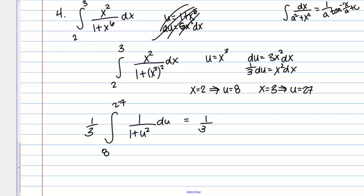Then if I actually take the antiderivative, this becomes 1 third inverse tan of u from 8 to 27. Then I just plug in, so this is 1 third inverse tan of 27 minus 1 third inverse tan of 8, and that's my answer.